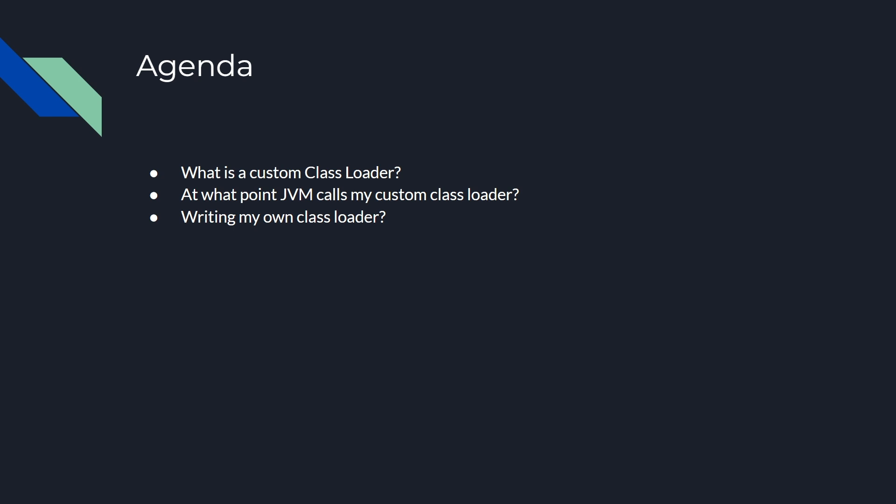Java allows us to create a custom class loader. Now, imagine we've created one — the next question is: at what point does the JVM call my custom class loader? A custom class loader is the same as any other class in the system, so a new instance must be created. When we create a new instance of the custom class loader and use it to load a class, at that point the JVM will call the findClass method of the custom class loader to locate and load the class.